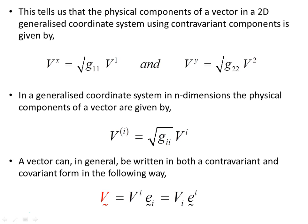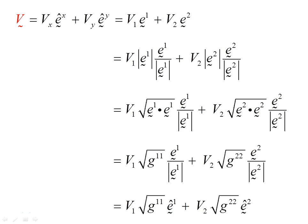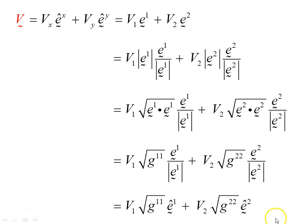A vector can in general be written in both contravariant and covariant form. The same operation of normalizing basis vectors applies to the covariant form as well. Working through the process, we end up with the contravariant form of the metric term G^11 (superscript) rather than the covariant form G_11 (subscript) that appeared previously — that is the only difference. This gives us the corresponding expression for the covariant case.